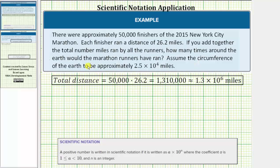Assume the circumference of the earth to be approximately 2.5 times 10 to the fourth miles. So the first step is to determine the total distance ran by all of the finishers. Because there were 50,000 finishers and each ran 26.2 miles, the total distance is equal to 50,000 times 26.2 miles, which is equal to 1,310,000 miles.